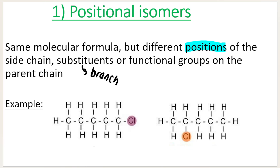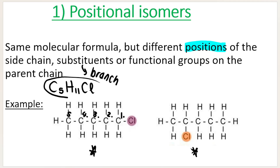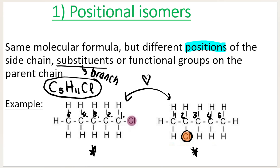If you look at my first compound, I have five carbons — C5H11Cl — but take a look at where chlorine is positioned. It's positioned on the first carbon; you would number the carbons from right to left. Chlorine is on the first carbon. However, the molecule on the right has exactly the same molecular formula, but the chlorine — the halogen substituent — has moved to the second carbon. It's no longer on the first carbon, so these two are called positional isomers.